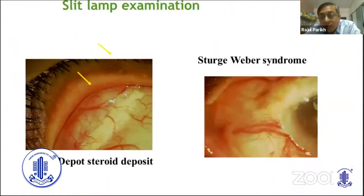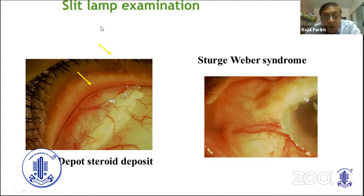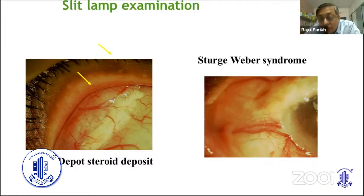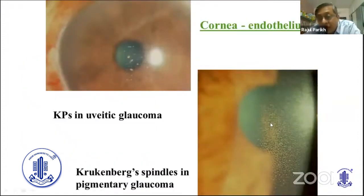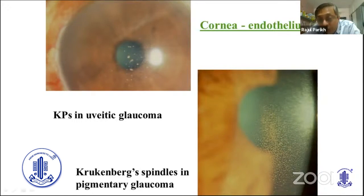If the patient has dilated episcleral veins, then we know that most probably the patient has increased episcleral venous pressure and that may be the cause of secondary glaucoma. On the other hand, if the patient has a steroid depot — some patients may have forgotten to give that history — then you know that the increased intraocular pressure is most probably because of the steroid depot. If on the cornea you have classic Krukenberg spindle, then you know the cause is pigment dispersion syndrome or pigmentary glaucoma. On the other hand, if the patient has KPs, then the rise in IOP may be because of the uveitis itself or steroids given for uveitis. The examination helps us in making the diagnosis.